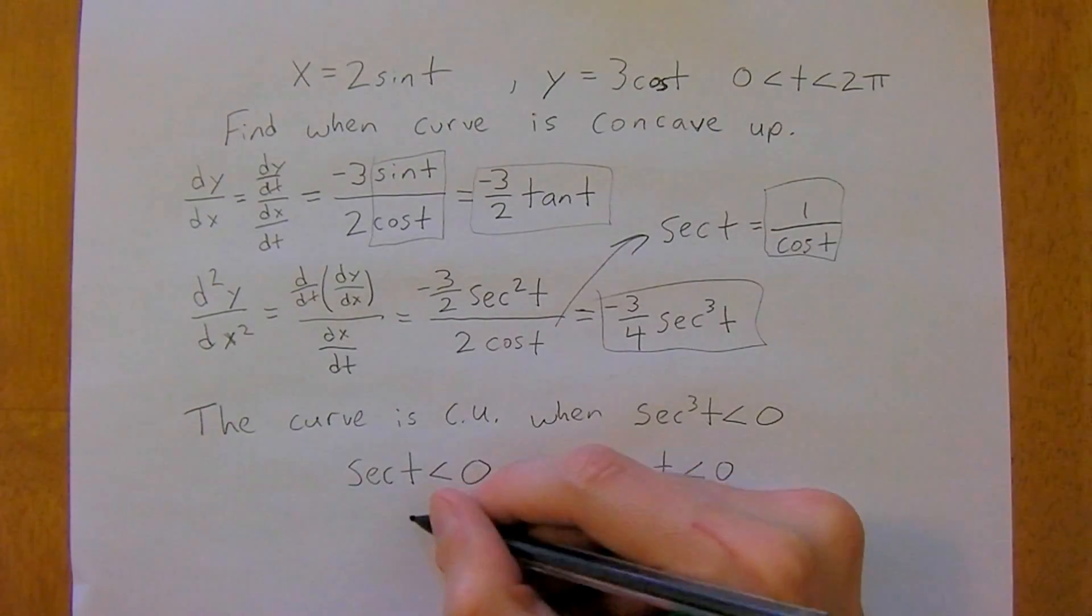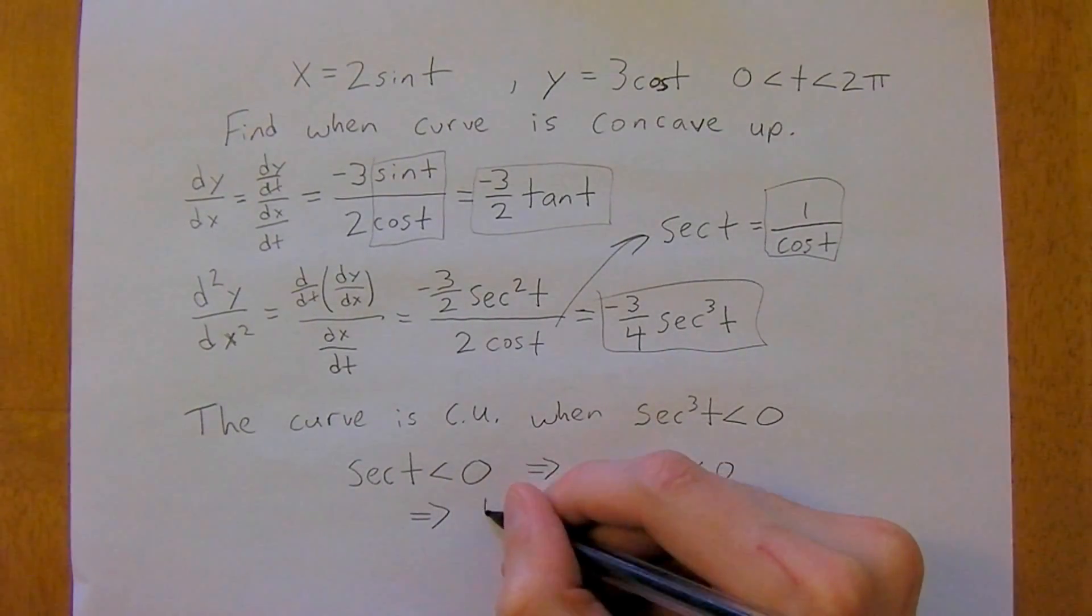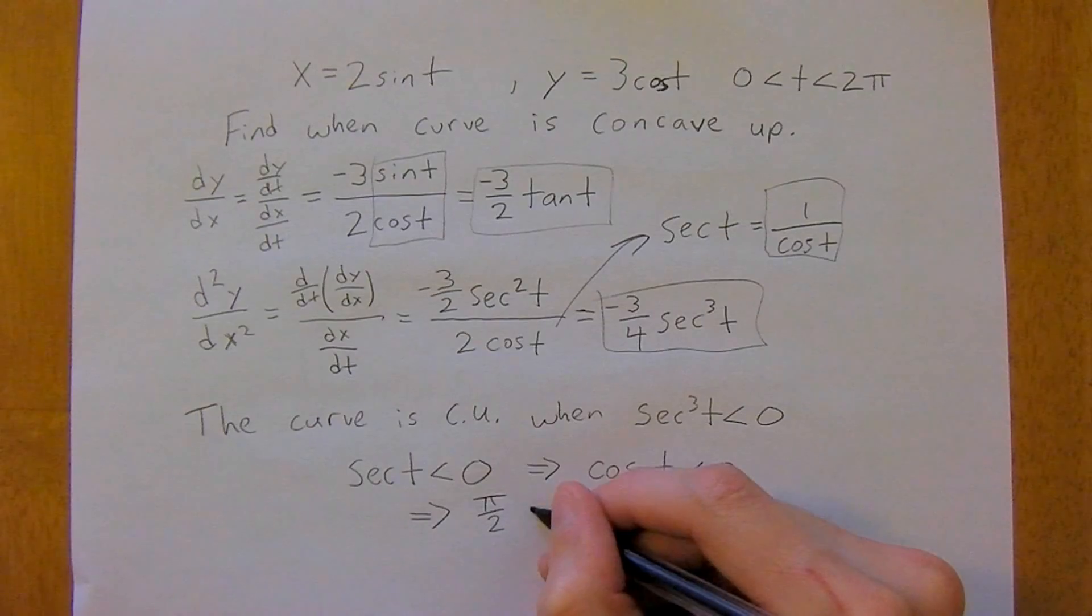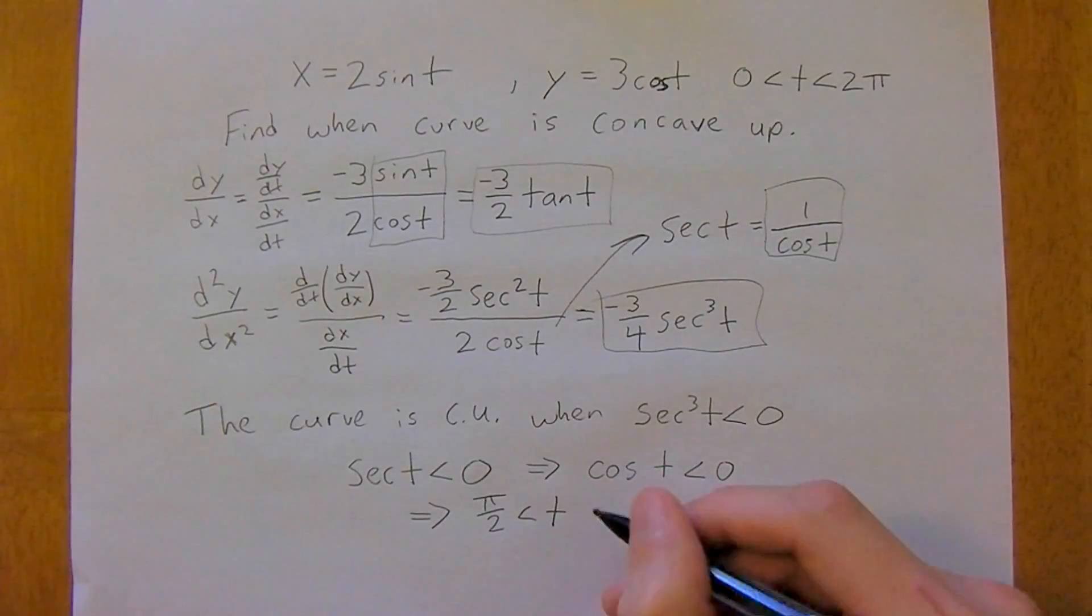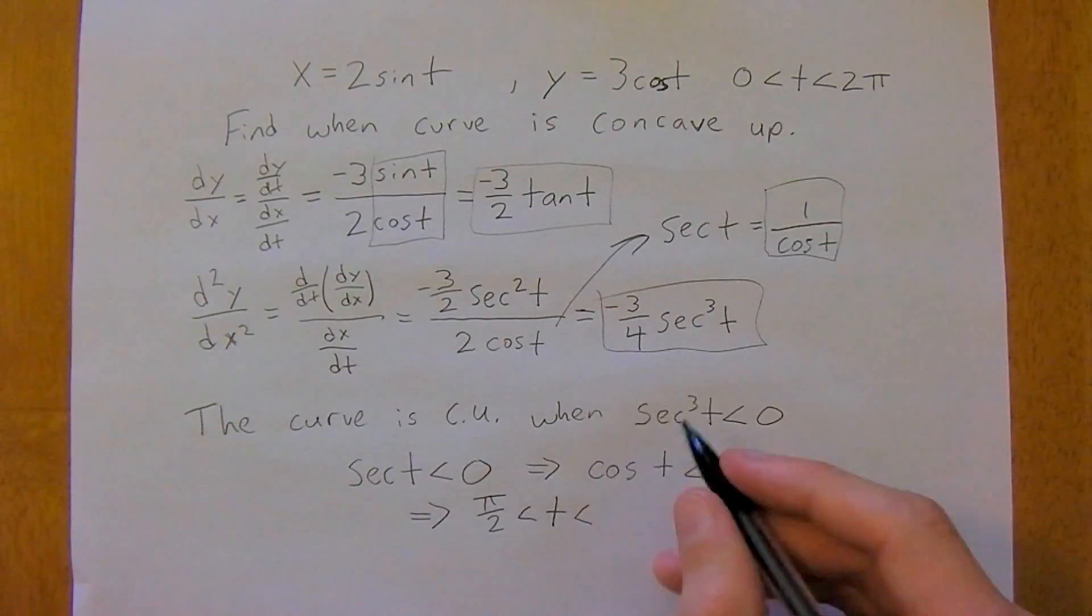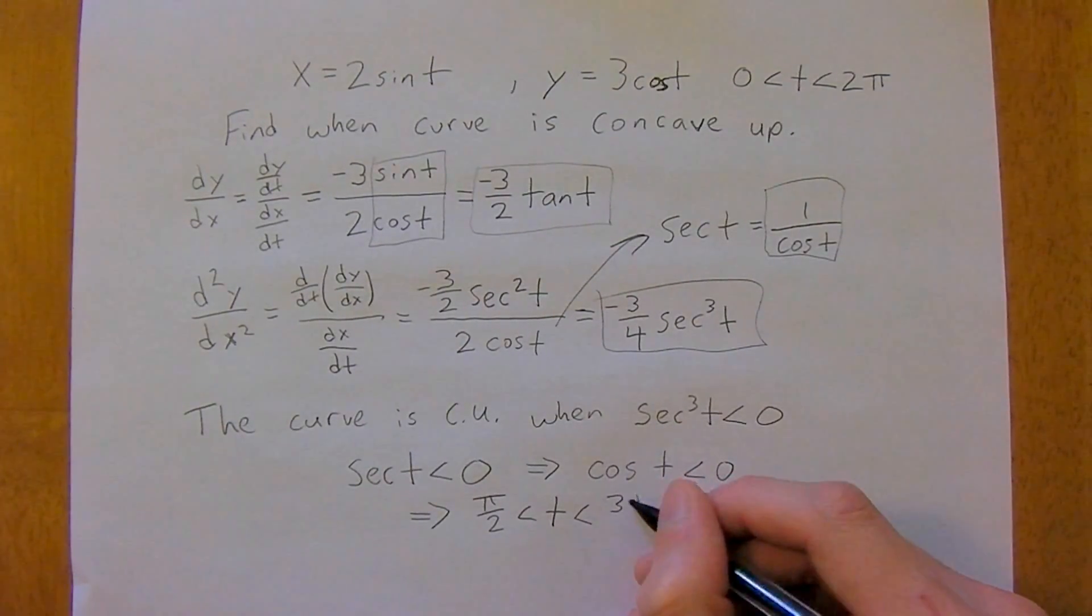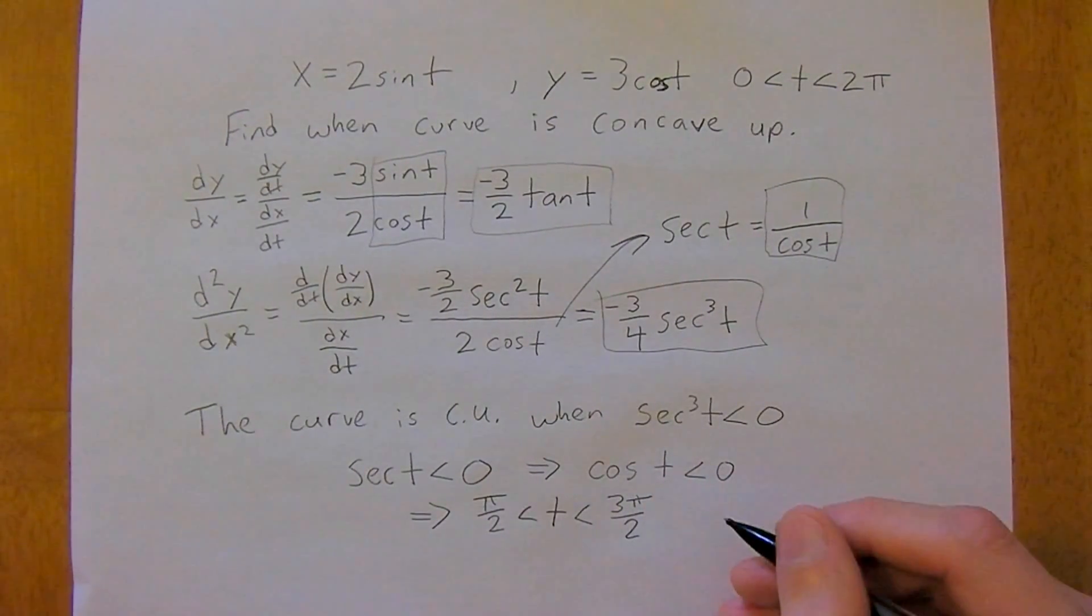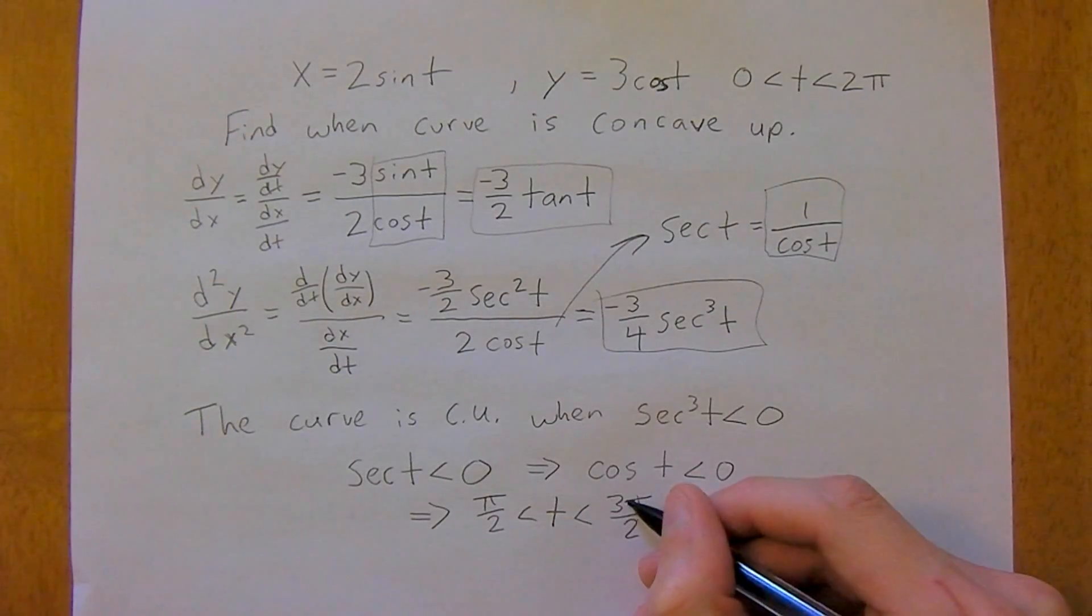And that's going to happen at pi over 2 is less than t. Or t is less than, is greater than pi over 2 and less than 3 pi over 2.